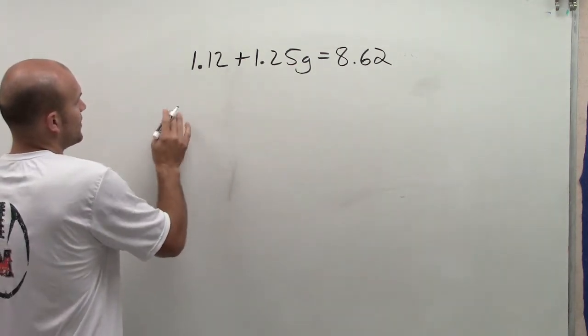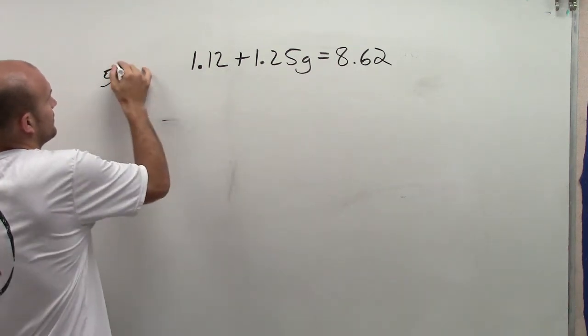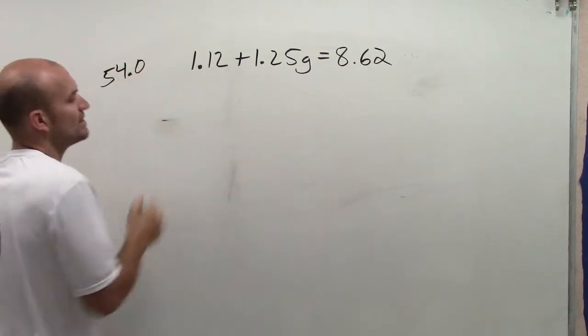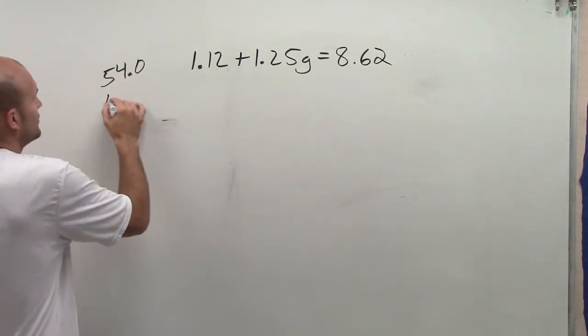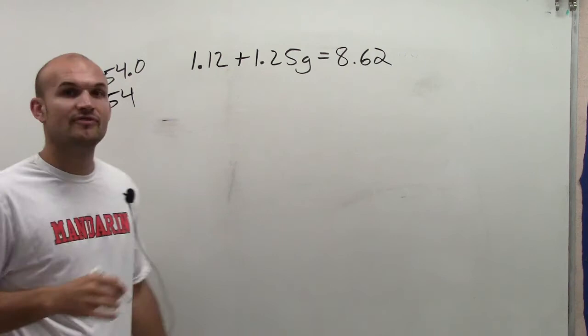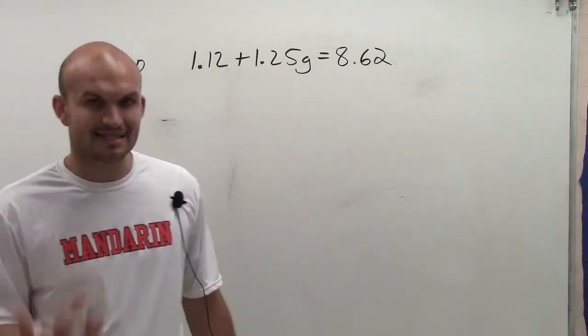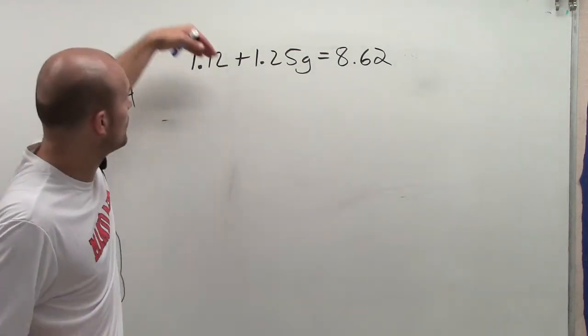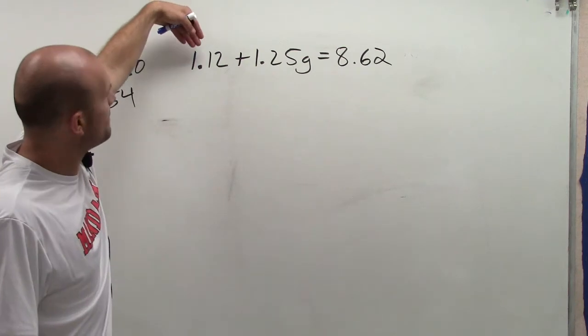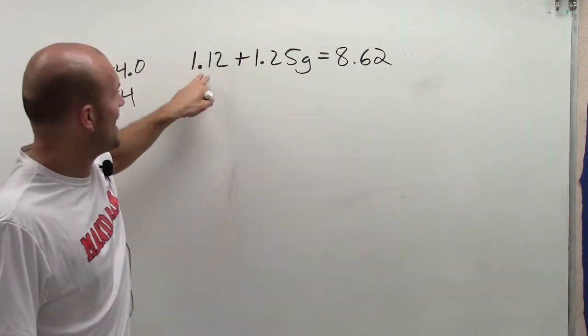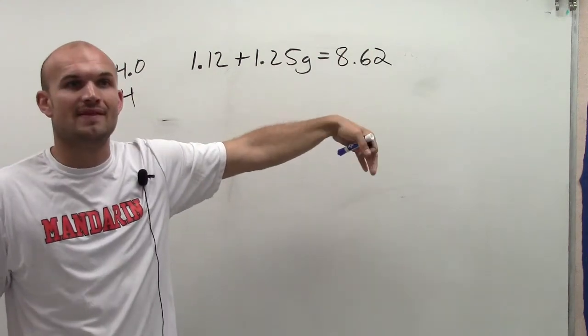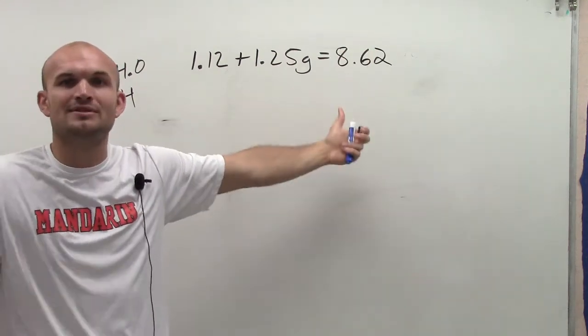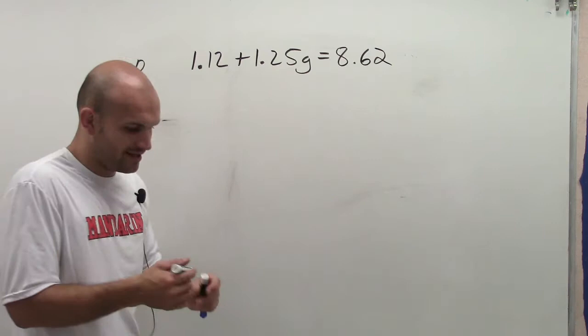We don't usually write 54.0. Unless we're measuring something or we want to know the exact value, we just usually write it as 54, as its integer value. So what I want to do is, if I can move these decimal points at the end of each one of these numbers, then I'm not really going to have to include the decimal point anymore.